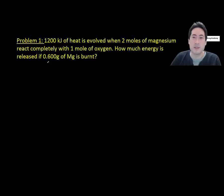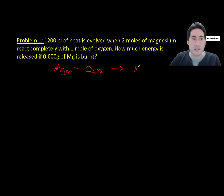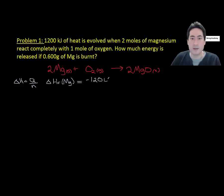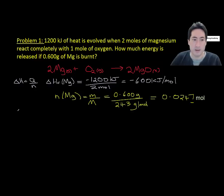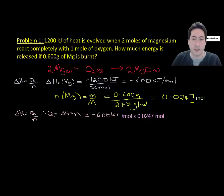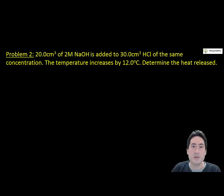Problem 1: 1200 kJ of heat is evolved when two moles of magnesium react with one mole of oxygen. How much energy is released if 0.6 g of magnesium is burnt? Write the balanced equation with state symbols. The heat of combustion of magnesium is −1200/2 = −600 kJ/mol. Moles of Mg = 0.6 ÷ molar mass = 0.0247 mol. Using delta H = Q/n rearranged: Q = −600 × 0.0247 = −14.8 kJ, giving 40.8 kJ of energy released.